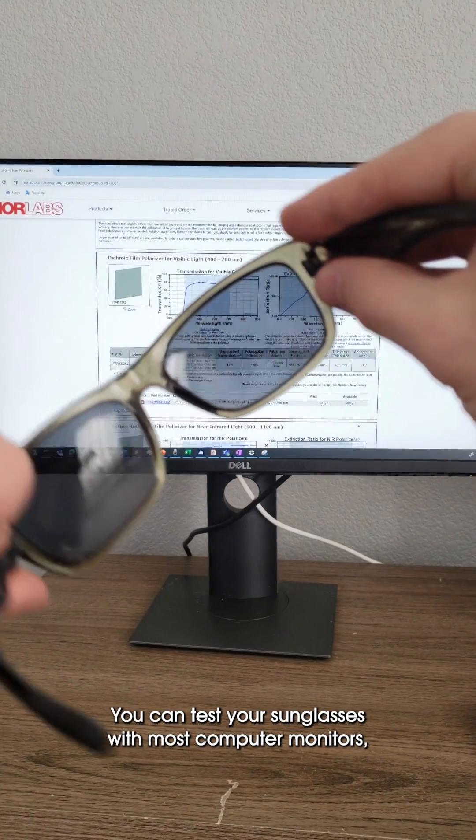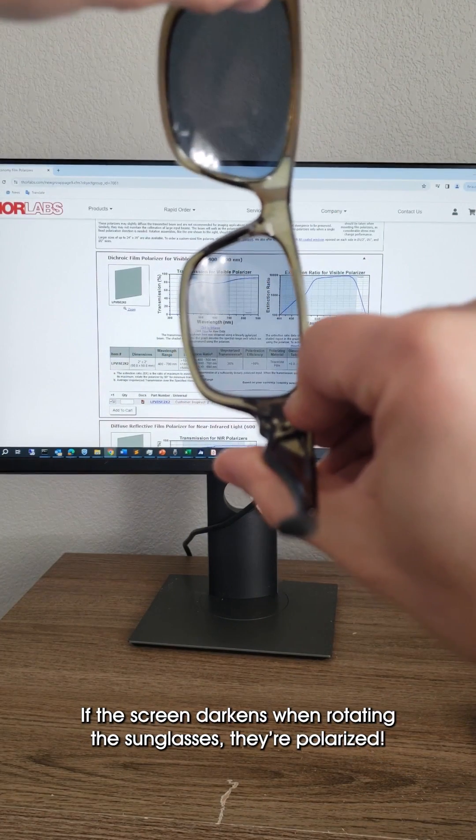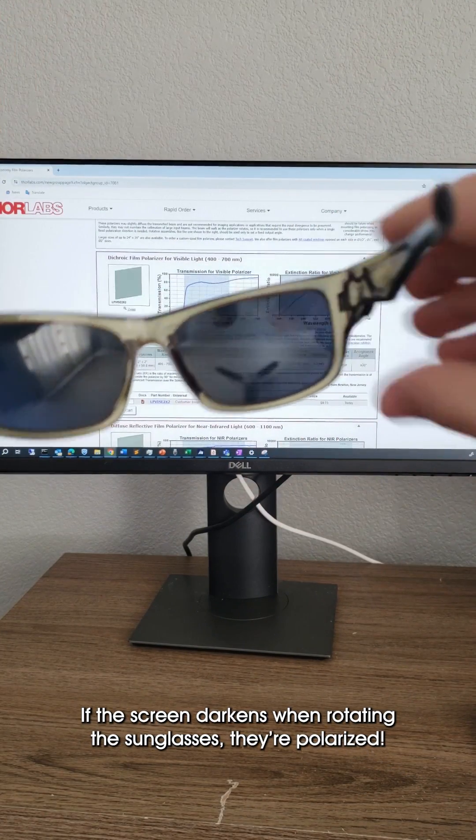You can test your sunglasses with most computer monitors, since they have polarized output. If the screen darkens when rotating the sunglasses, they're polarized.